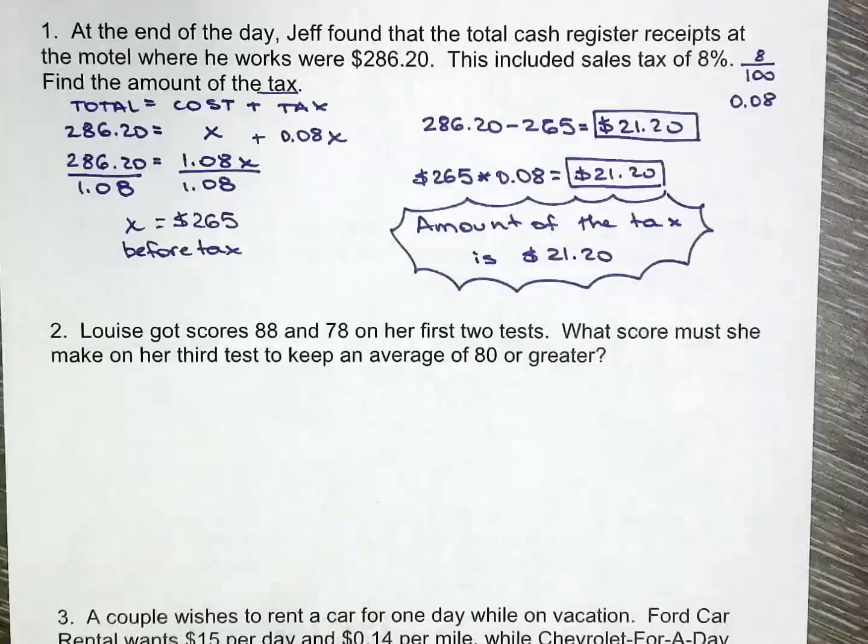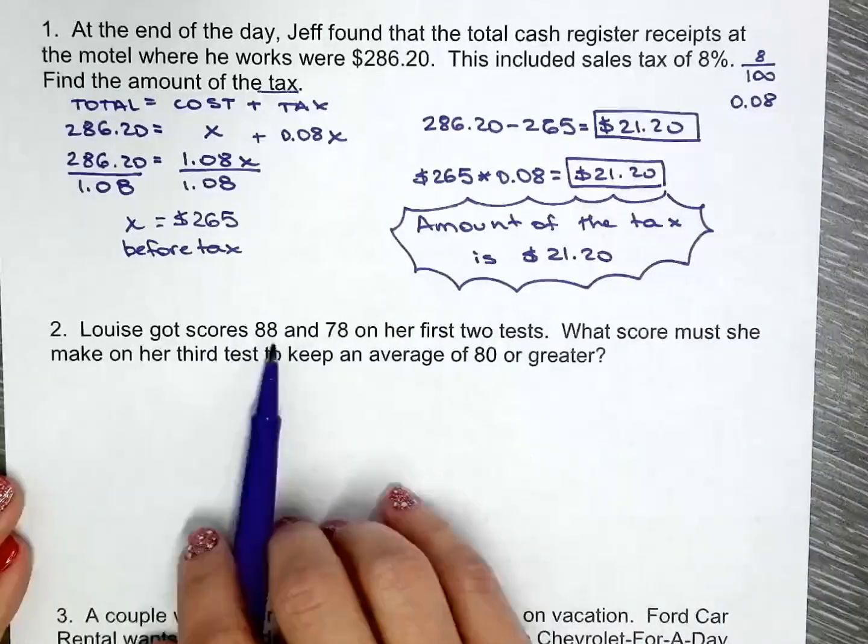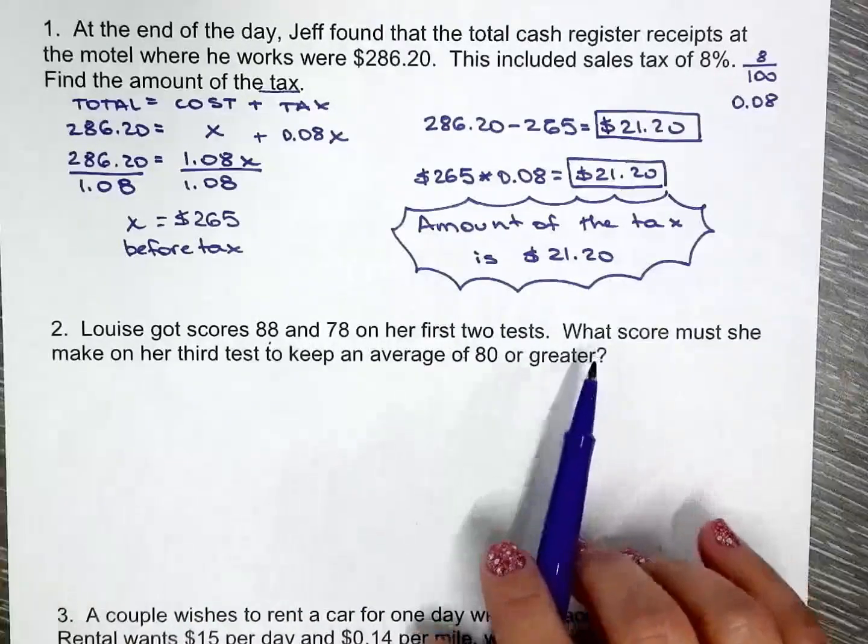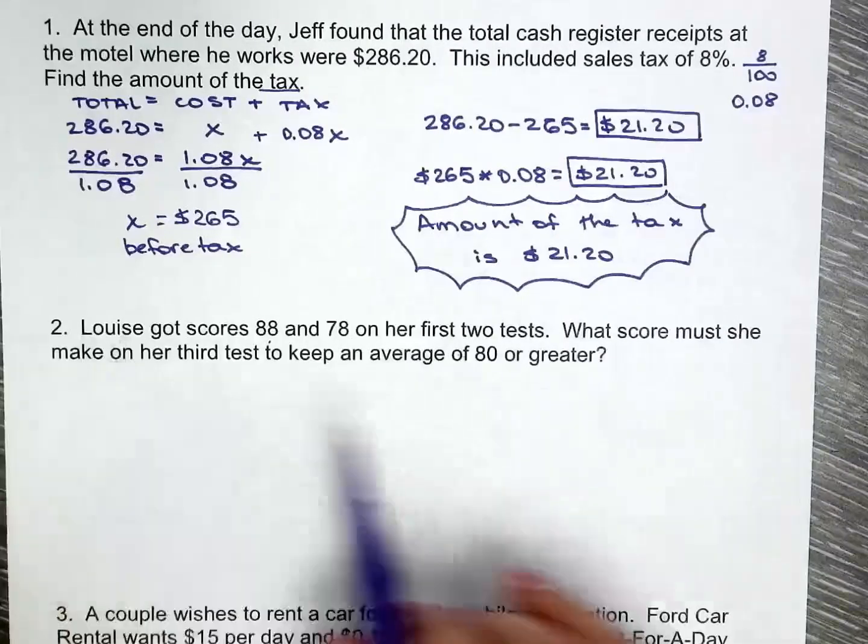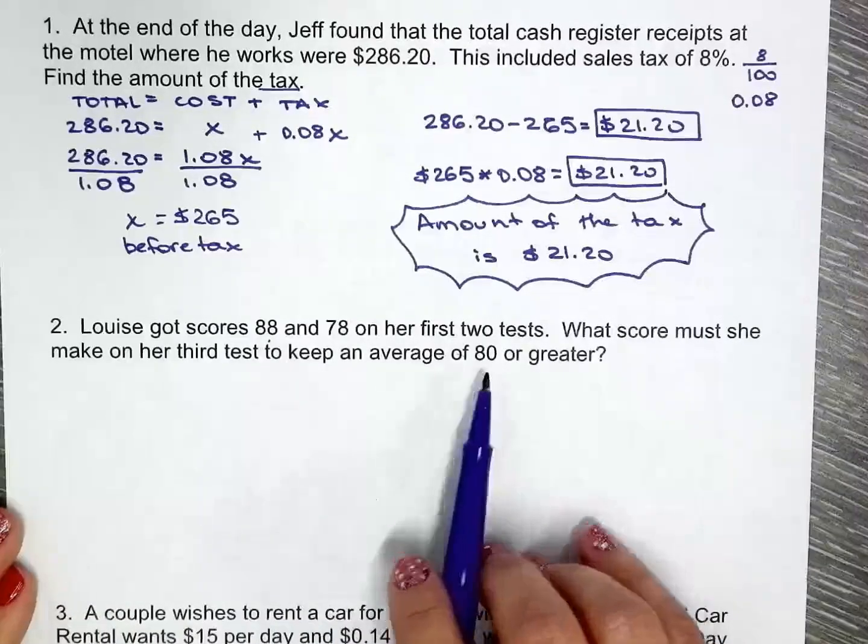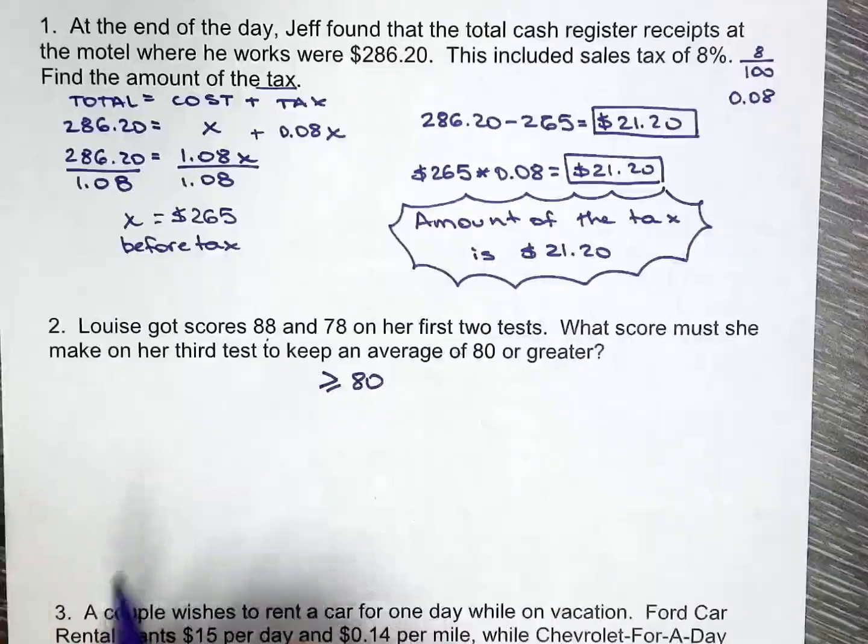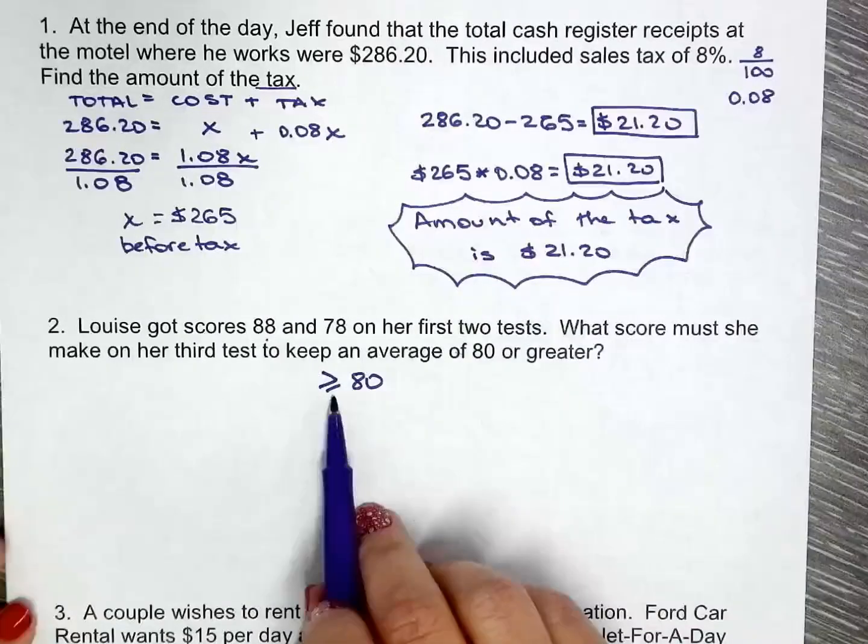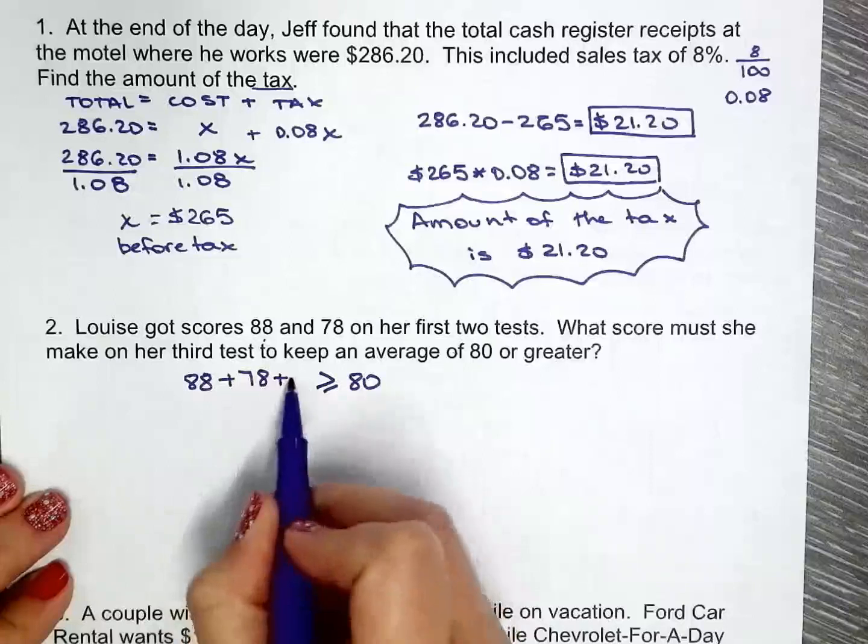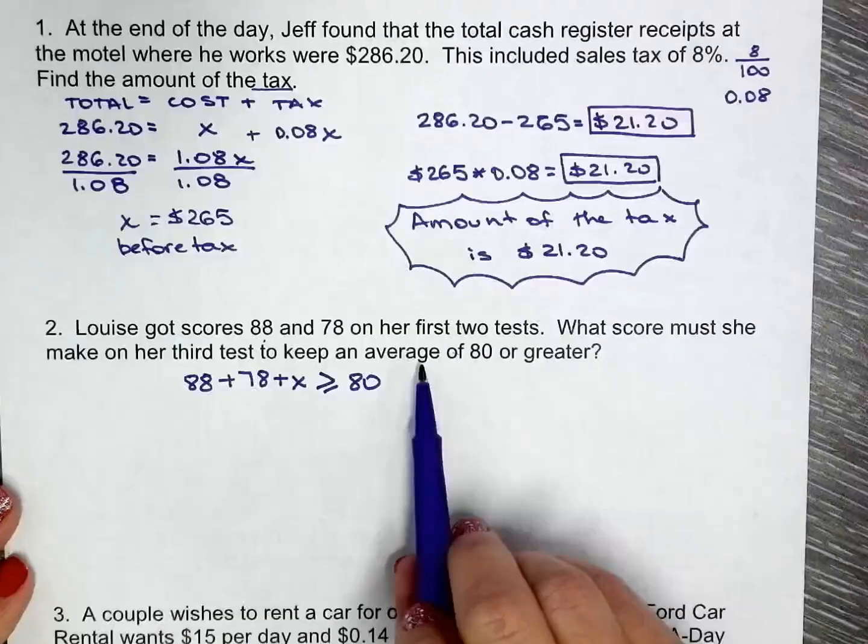The next scenario we have, Louise got 88 and 78 on her first two tests. What score must she make on the third test to keep an average of 80 or greater? So 80 or greater, anything 80, 85, 89, anything above 80 is good, but 80 is also good too. So she has 88, she has 78. What does she need for the third test? We're talking about average. How do we find average?